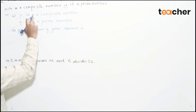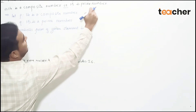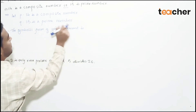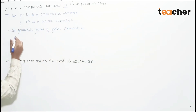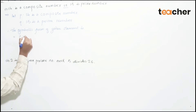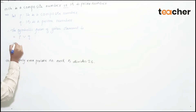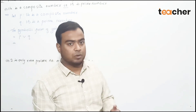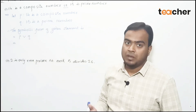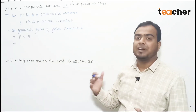The symbolic form of the given statement is P disjunction Q — that is, P ∨ Q. Now let's talk about the truth values of the individual simple statements.